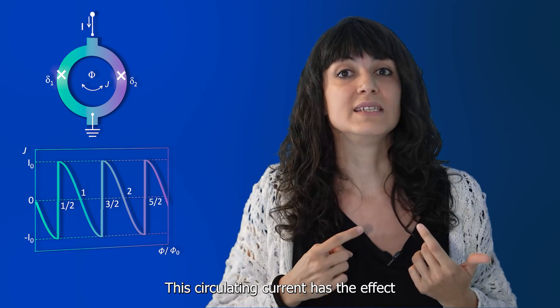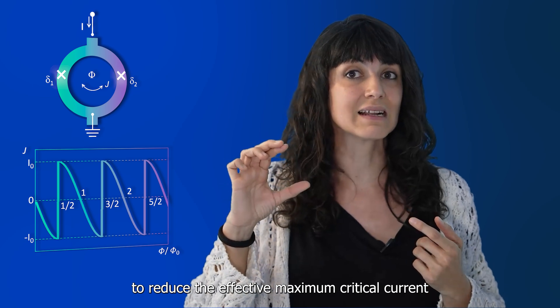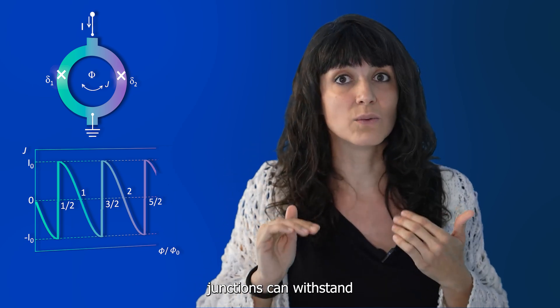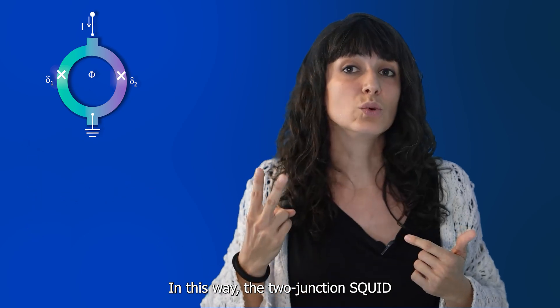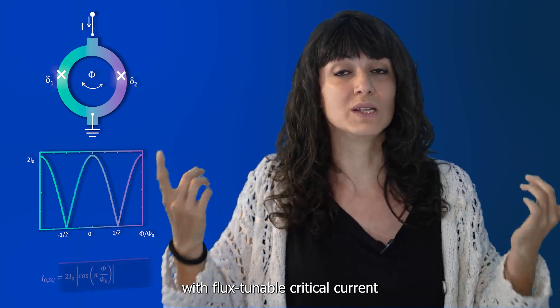For this purpose, a circulating current will develop that must abruptly invert its sign at half-integral values of the flux quantum. This circulating current has the effect to reduce the effective maximum critical current that the two parallel junctions can withstand. In this way, the two-junction SQUID can be seen as a single Josephson junction with flux-tunable critical current.